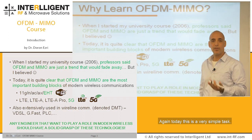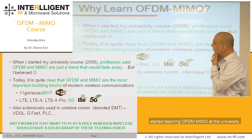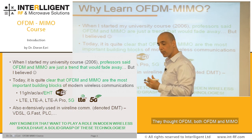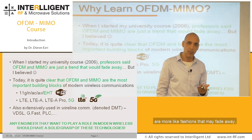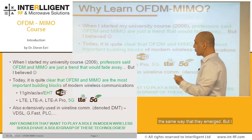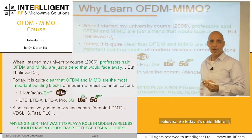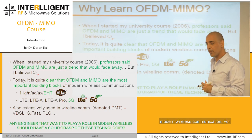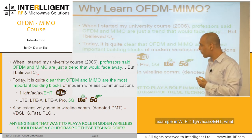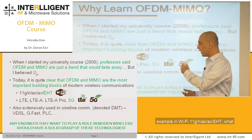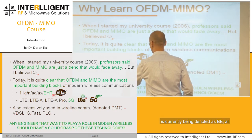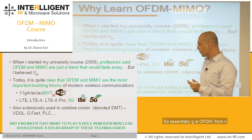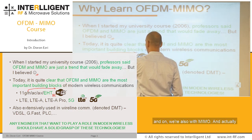So why learn OFDM MIMO? When I started teaching it at university, professors were skeptical — they thought OFDM and MIMO were fashions that might fade away. But today it's very clear: OFDM and MIMO are the most important building blocks of modern wireless communication. In Wi-Fi, 802.11g, n, ac, ax, and EHT (currently being denoted as BE) — all of these are OFDM MIMO and OFDMA. From 802.11n onward we have MIMO, and from 802.11ax onward we also have OFDMA.